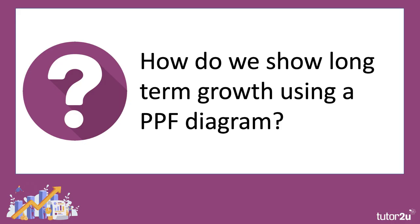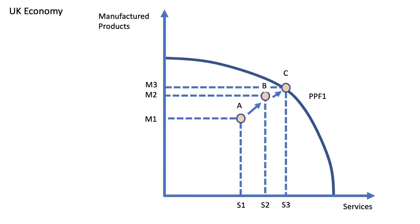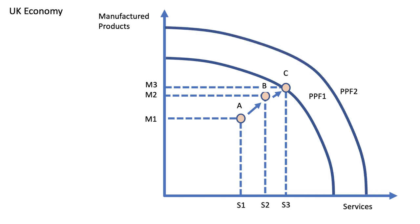So how do we show long-run growth using a PPF diagram? If short-term growth runs from A to B and from B to C, then long-run growth is illustrated by an outward shift of the production possibility curve from PPF1 to PPF2.